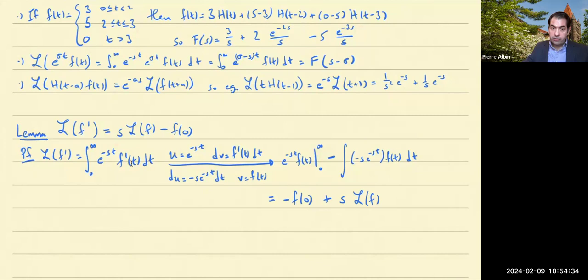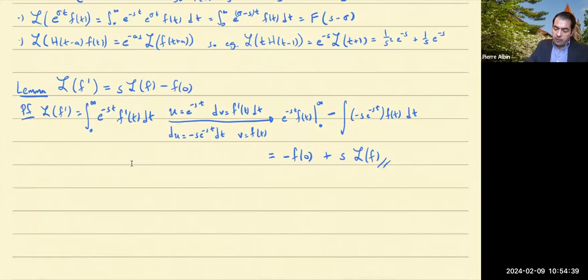When we evaluate at infinity we get zero, so it's just what we get when we evaluate at zero — that's minus f of 0. Then the next term: minus and minus gives plus, and we can pull s out of the integral, ending up with s times the Laplace transform of f. That proves the lemma. We can use this formula to find, for example, the Laplace transform of f double prime.